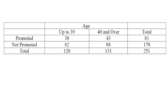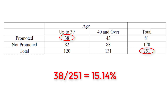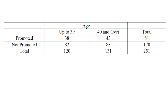A tough one for many people: 'what percent of employees were promoted and up to 39 years of age?' Here, 'what percent of employees' means all employees, which is 251. 'Promoted and up to 39 years of age' means they are in both groups — that's 38 people. So 38 out of 251 is the answer. Watch for the subtle differences and circle the numbers you're using to make sure you choose the right ones.